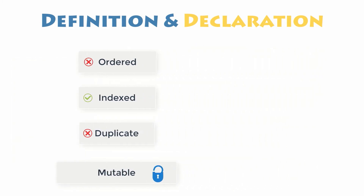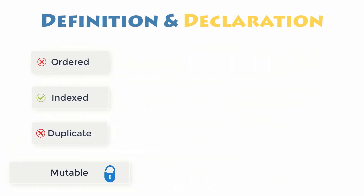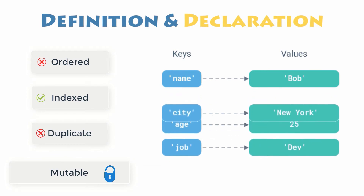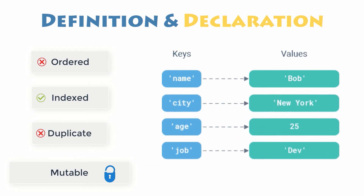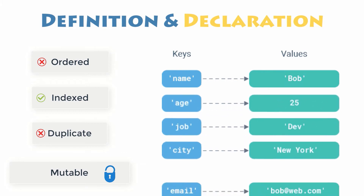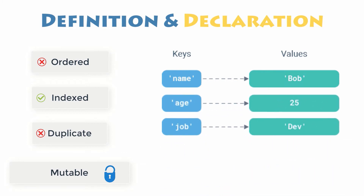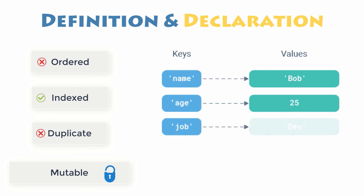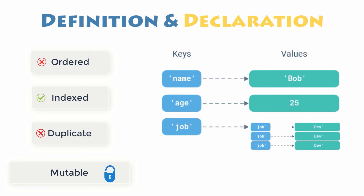The important properties of Python dictionaries are as follows. Dictionaries are unordered — items stored in a dictionary are not kept in any particular order. Dictionaries are mutable — they can be changed in place, can grow and shrink on demand. Accessed by keys — dictionary items are accessed by keys, not by their position. Dictionaries can be nested — a dictionary can contain another dictionary and so forth.